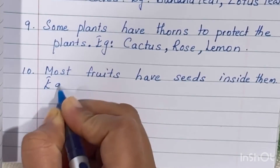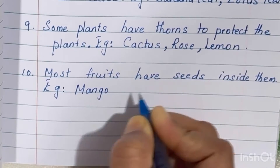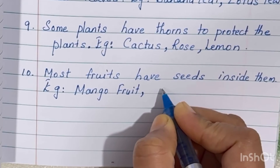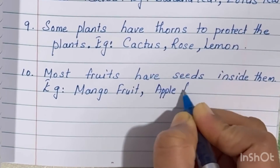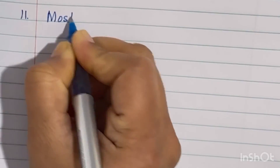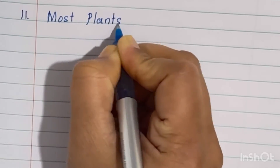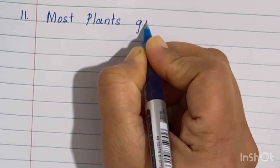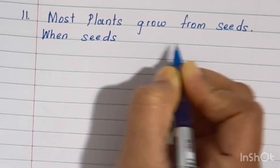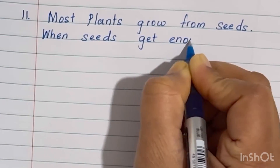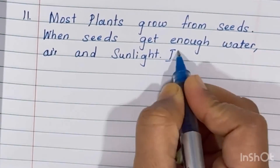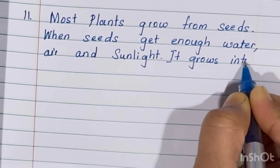Most fruits have seeds inside them — for example, mango, apple, and orange. Most plants grow from seeds. When seeds get enough water, air, and sunlight, they grow into a new plant.